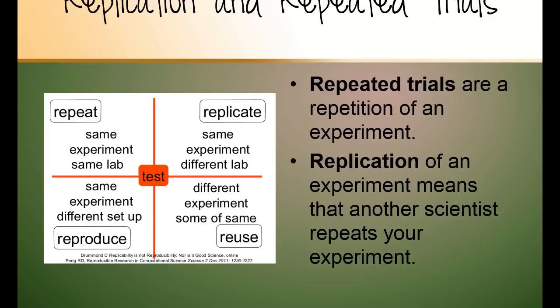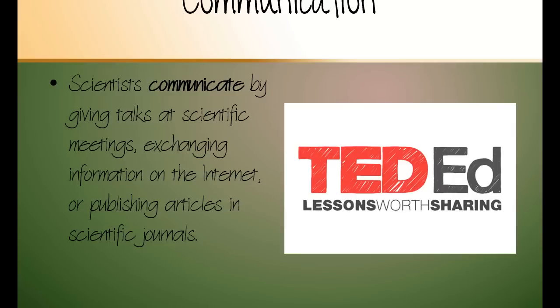Replication is a little bit different. That means another scientist repeats your experiment. And if they get the same results as you, that's great. That means you're both on the same page. However, if a scientist goes to replicate your experiment and does not get similar results, something's gone wrong, either on your end or theirs. And then you guys have to work out what that issue was.